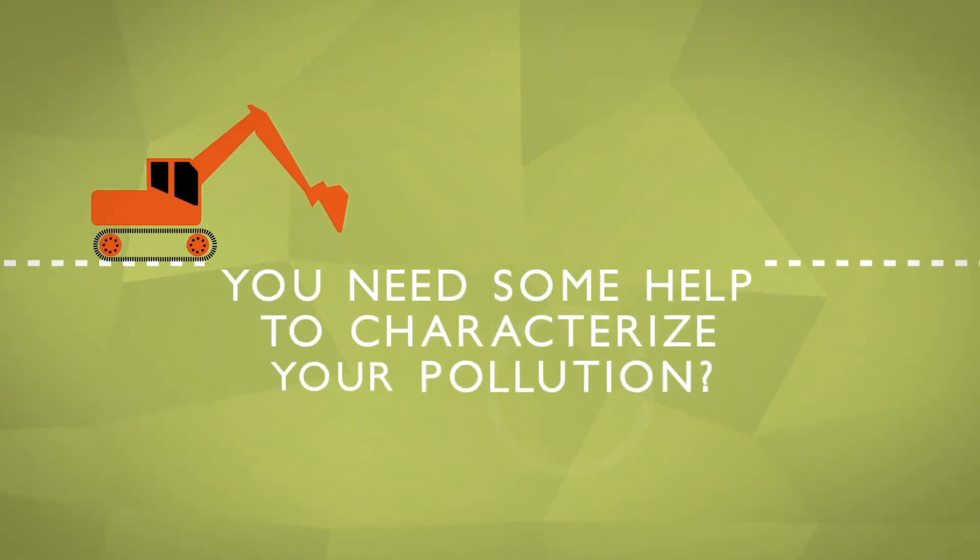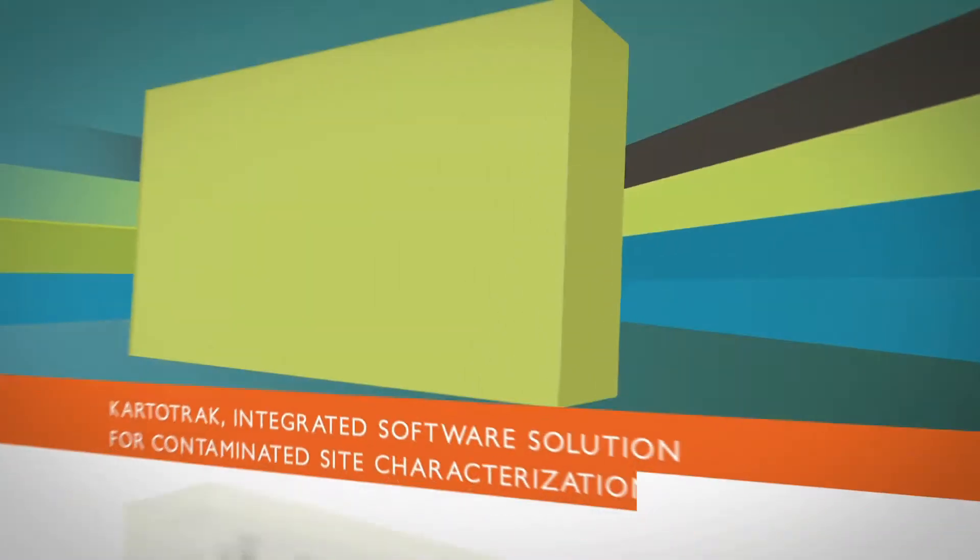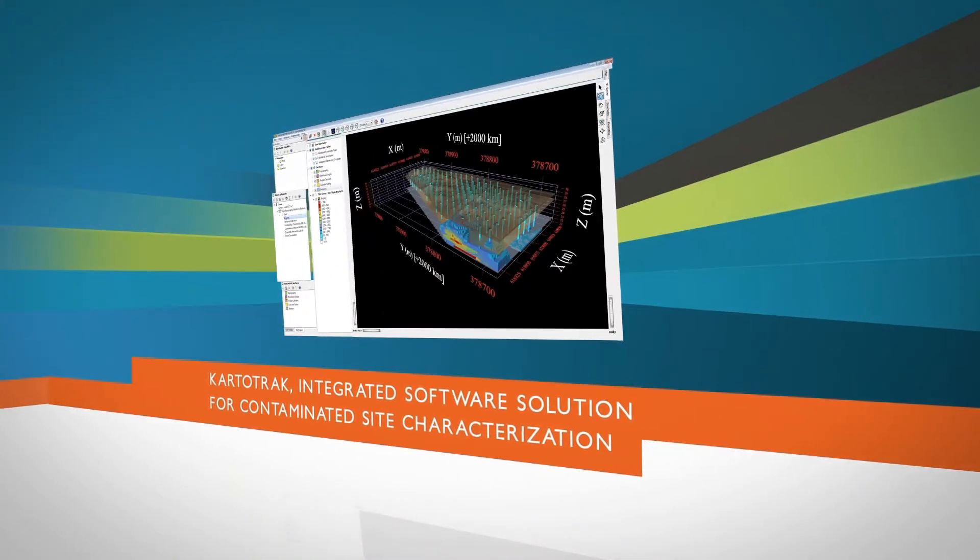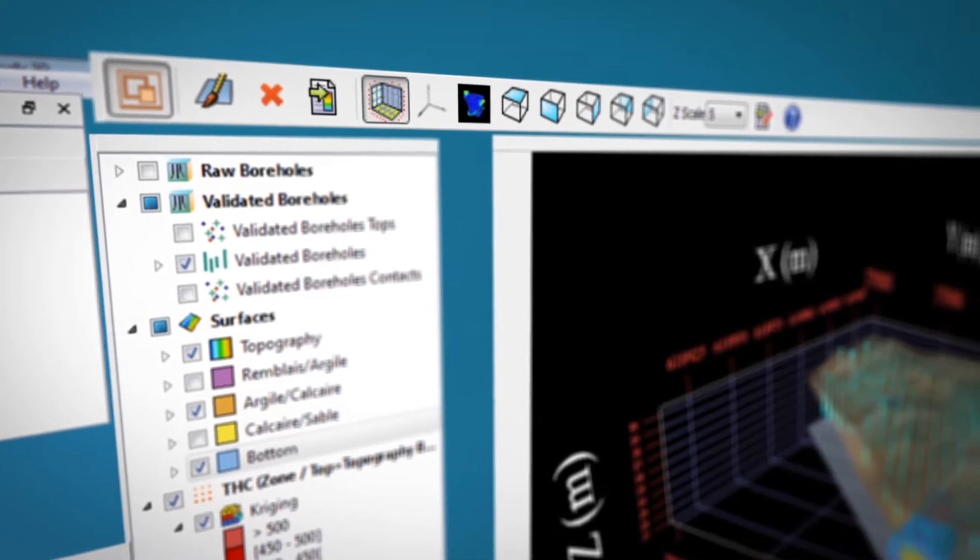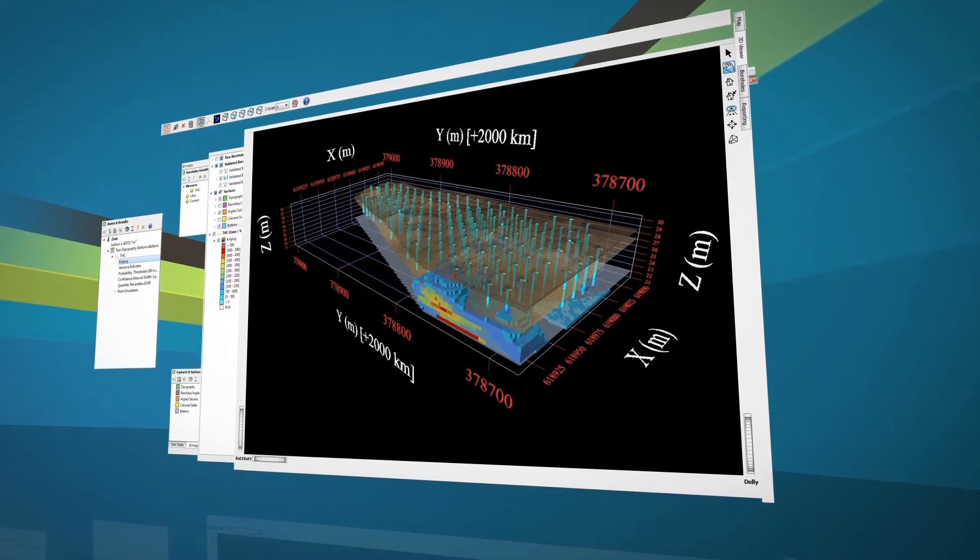You need some help to characterize your pollution? Cartotrack is a cost-effective software for thorough contamination diagnosis, facilitating your decision-making process.